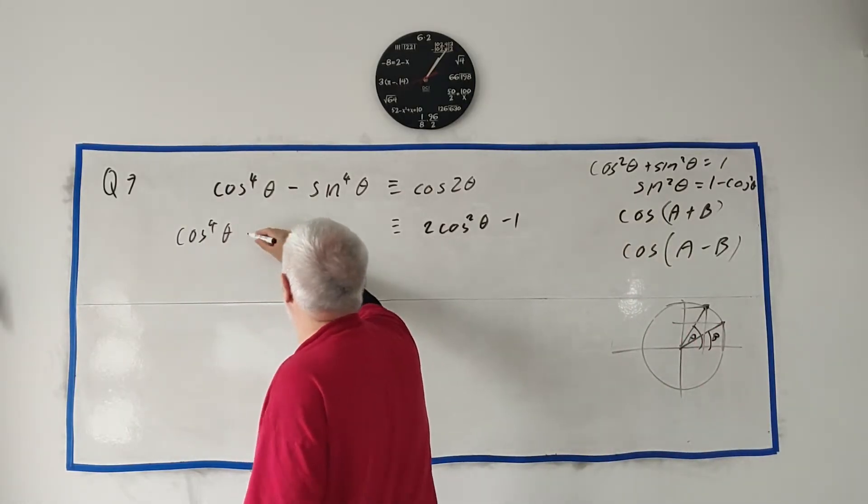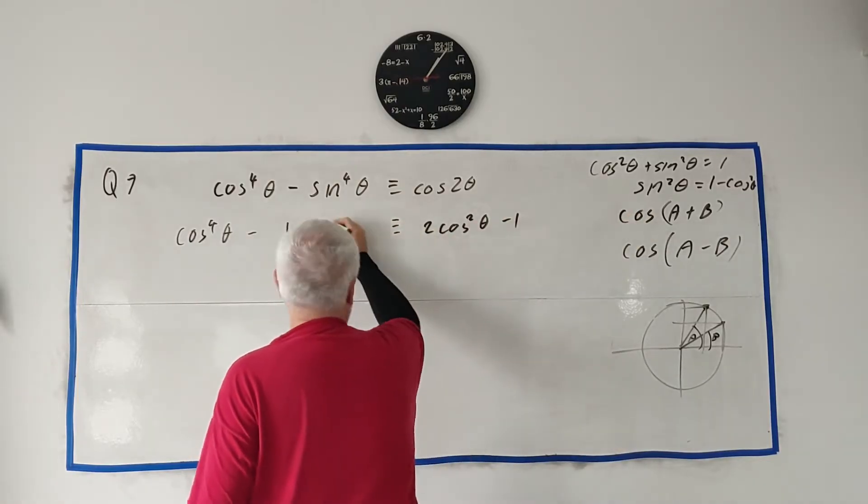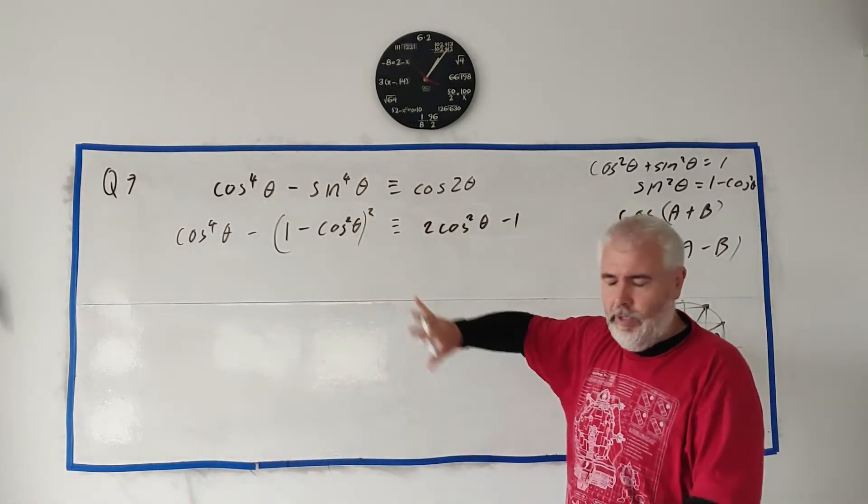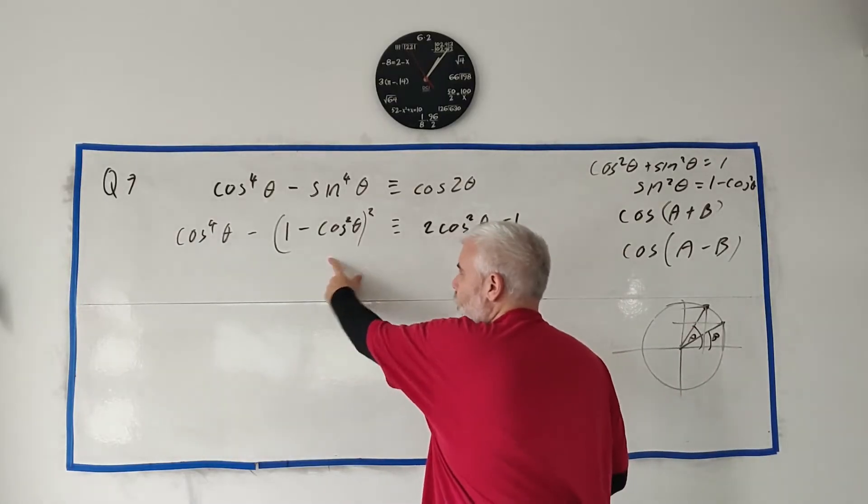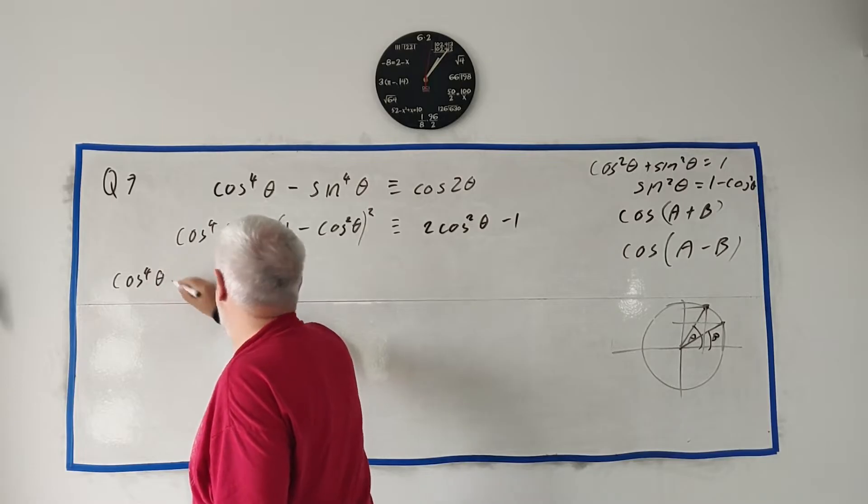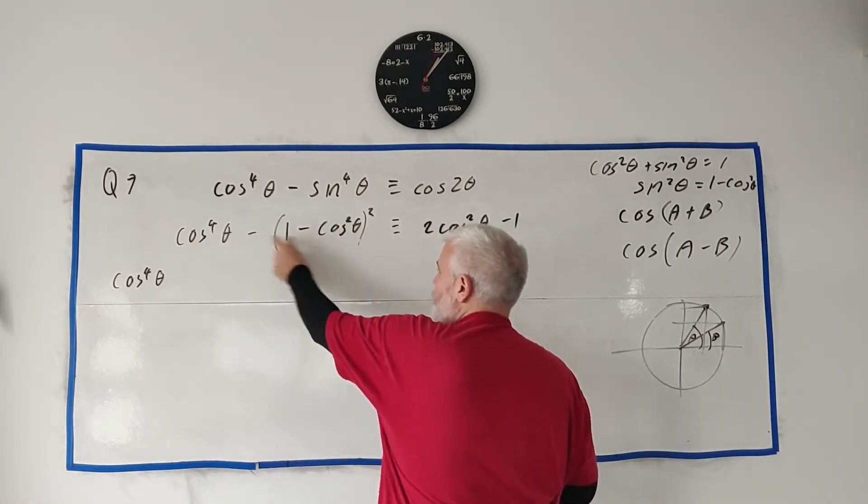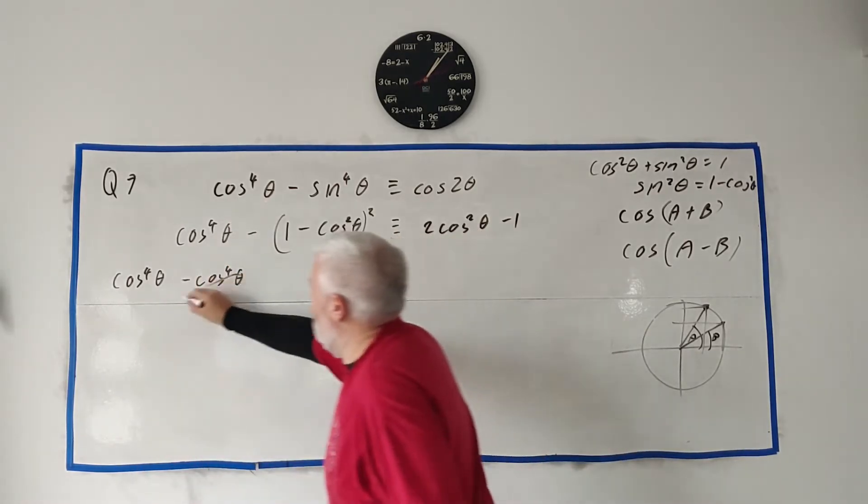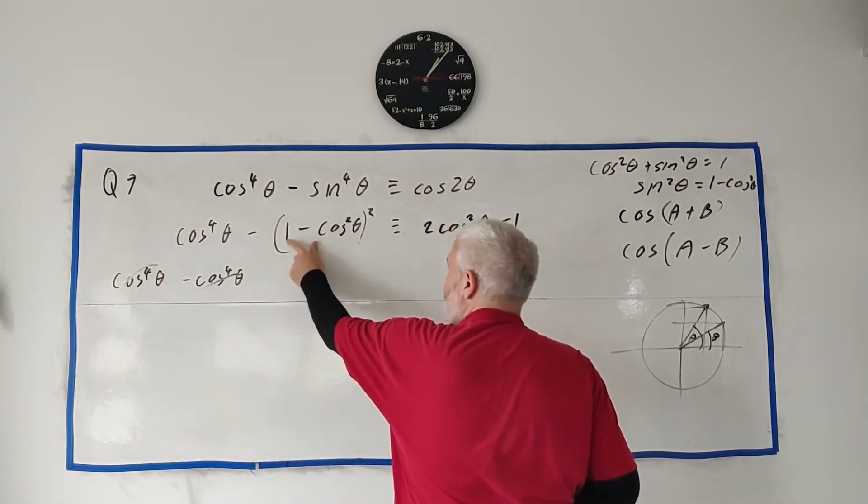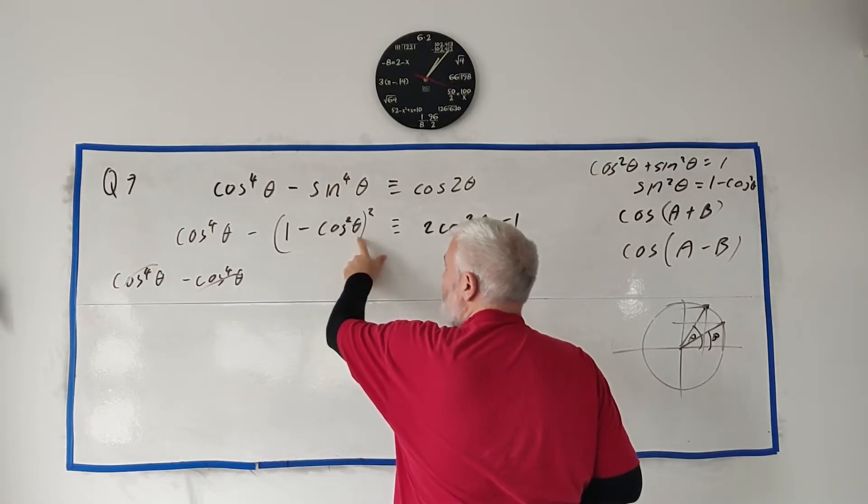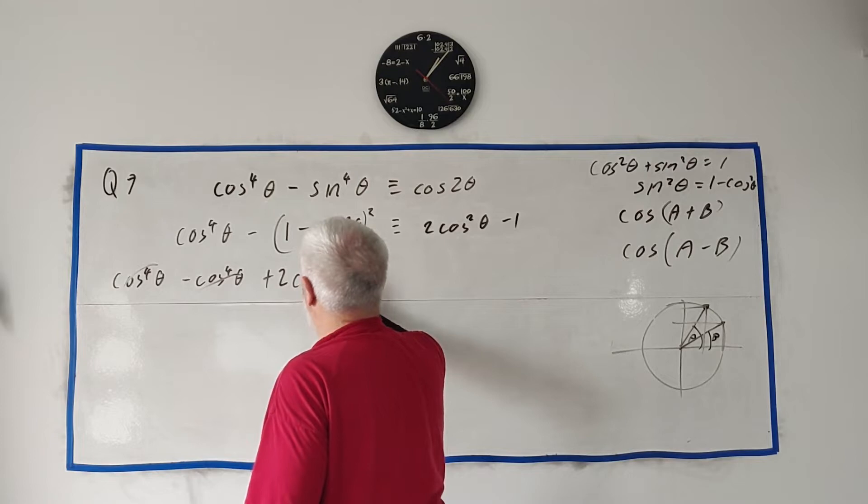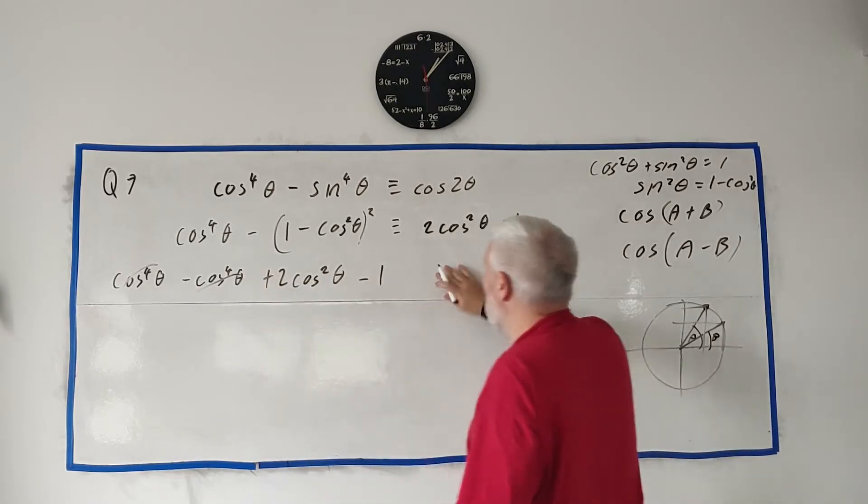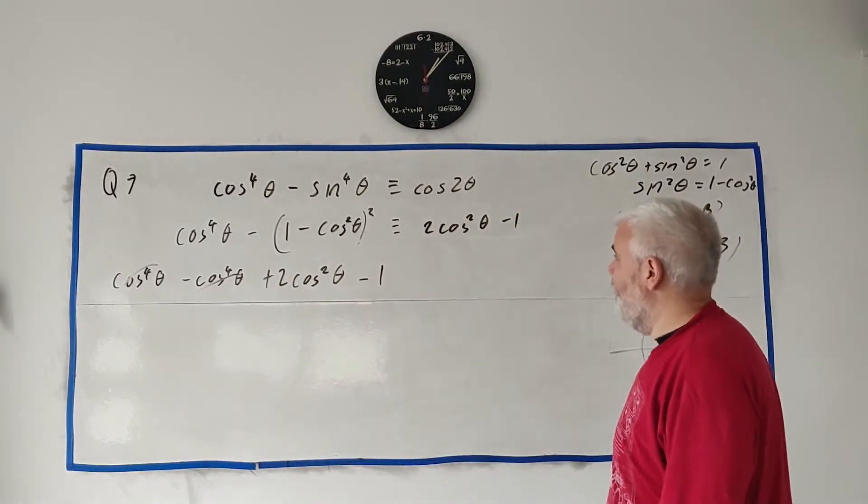This would become cos⁴θ minus this squared: (1 - cos²θ)². And we can square this out. There's another way to do this question, by the way. We'd get cos⁴θ, this squared would be plus, with this minus we'd have minus cos⁴θ. These would cancel. In here also, we get 1 times this and this times 1, that'd give us -2cos²θ, by another minus, so we'd have +2cos²θ, just like here. And we'd get 1 by 1 by a minus, so we'd get -1. And this is the same on both sides. So that's how you do this question.